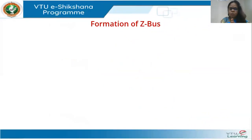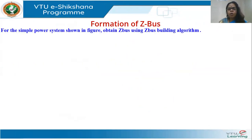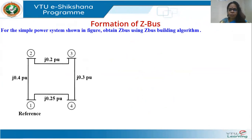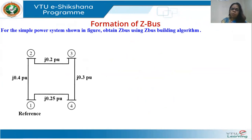We will form the Z-bus of our system using the algorithm we developed. Let us consider this system — it's a simple four-bus system. One of the buses is the reference. In a practical system, the reference bus is the ground, so the entire bus impedance matrix or bus admittance matrix is built with ground as reference. When given a network, how do you start building the Z-bus?